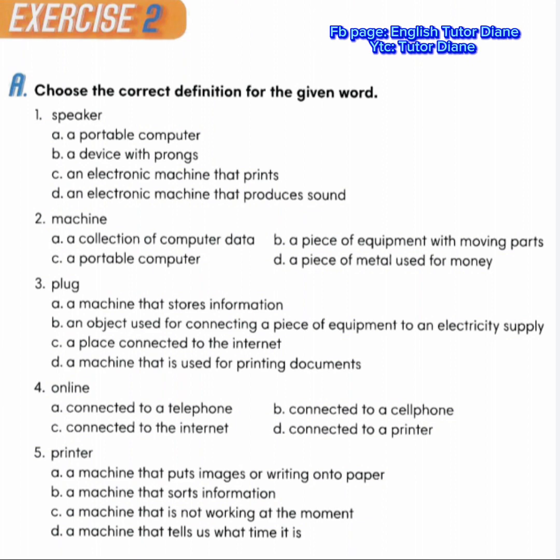Number 5, what is a printer? A, a machine that puts images or writing onto paper. B, a machine that sorts information. C, a machine that is not working at the moment. D, a machine that tells us what time it is. Correct answer is A, a machine that puts images or writing onto paper.